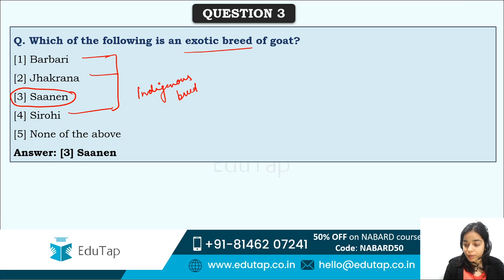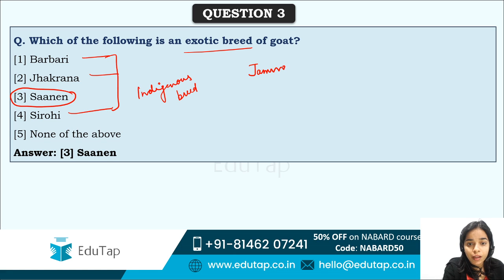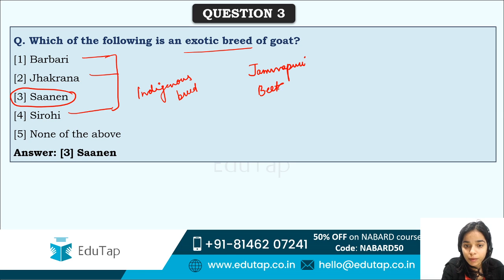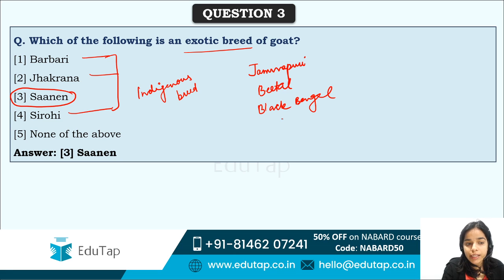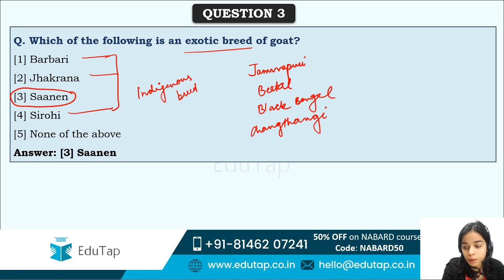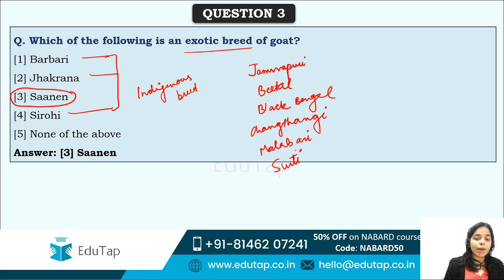Some important indigenous breeds of goat to remember: Barbari, Jamunapari, Beetal, Black Bengal, Sirohi, Chung Thangi — from which Pashmina wool is produced — Malabari, Surti, and Jhakrana. These are the major indigenous breeds of goat you should remember.